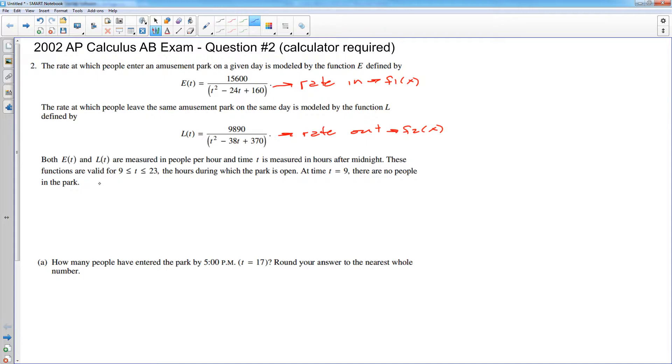Now before I tackle the problem, some stuff that you need to know about this. We have the rate that people are entering and leaving. Anytime you're given a rate in and a rate out, then you know that the total rate of change is always going to be the rate in minus the rate out. So the overall rate of change for the number of people in the park is going to be the difference between those two functions.